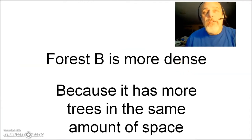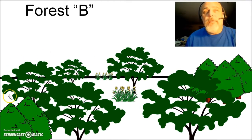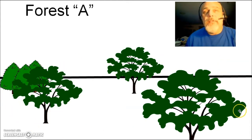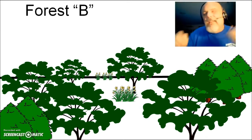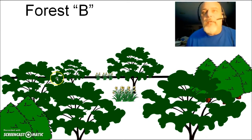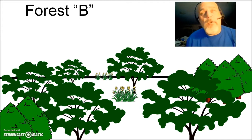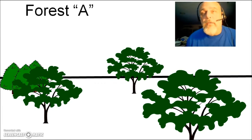Forest B is more dense because it has more trees in the same amount of space. This forest has this much space, and forest B has about the same amount of space — however, there are far fewer trees in forest A than in forest B. Another way to think about it: if you were in the middle of a forest and closed your eyes and started running randomly, you're much more likely to run into something in the more dense forest.